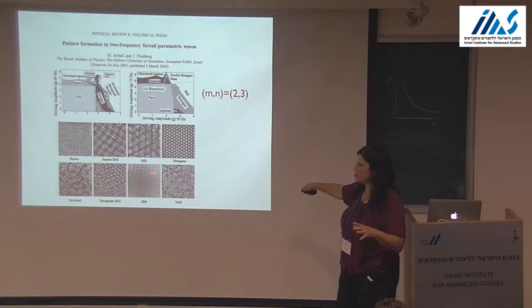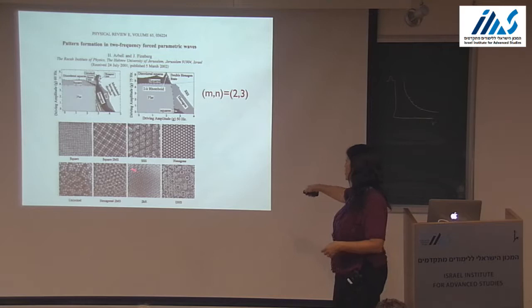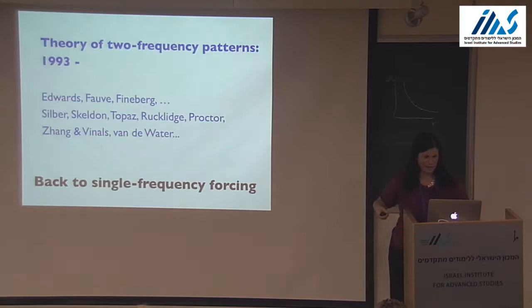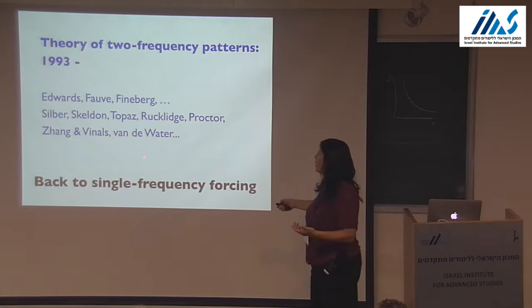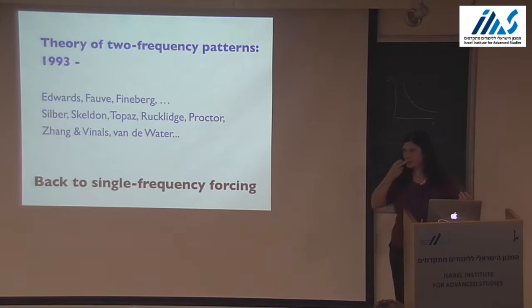Here's Arbel and Feinberg's big survey article on two-frequency forcing with m and n equals two and three. Look at all the different things they produce: super squares, hexagons, and all these kinds of things. This occupied theorists basically ever since. Edwards and Feinberg also produced a lot of their own theory, but then there were pure theorists churning out paper after paper to explain quasi-patterns. This turned into a whole field based on what happened in Lyon with Fauve.